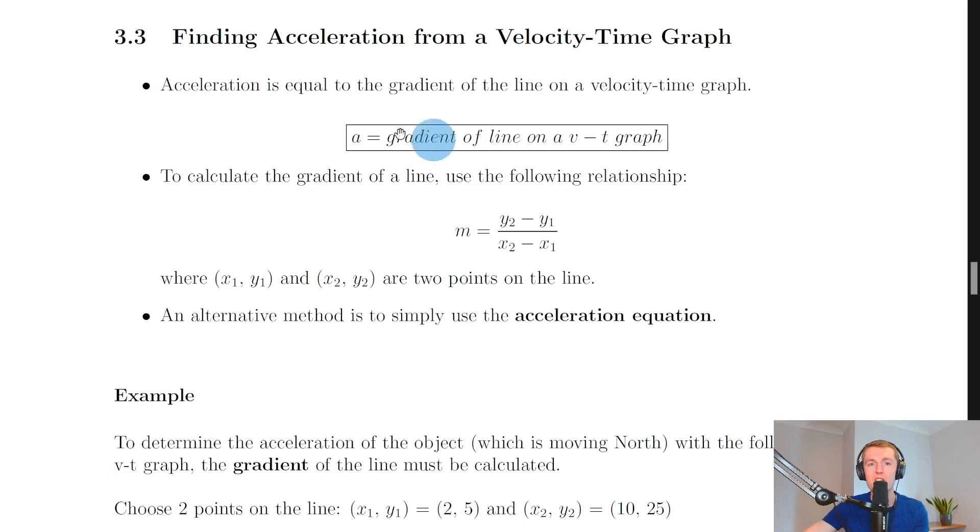Acceleration is equal to the gradient of the line on a velocity-time graph. Remember, displacement or distance was equal to the area under the velocity-time graph, whereas acceleration is equal to the gradient of the line on the velocity-time graph. You need to remember the difference.